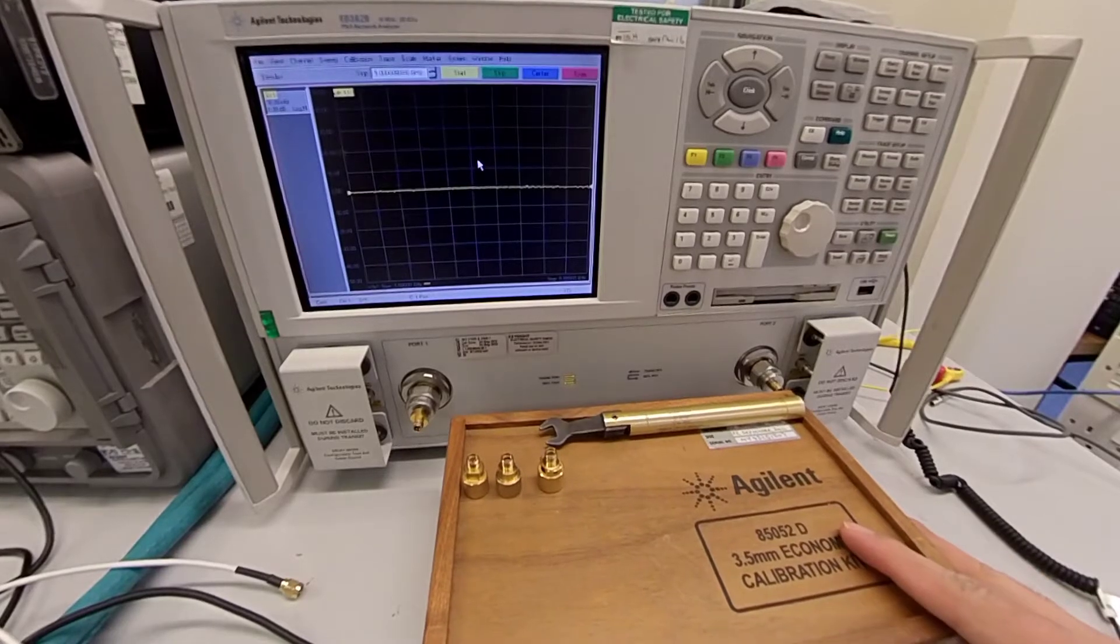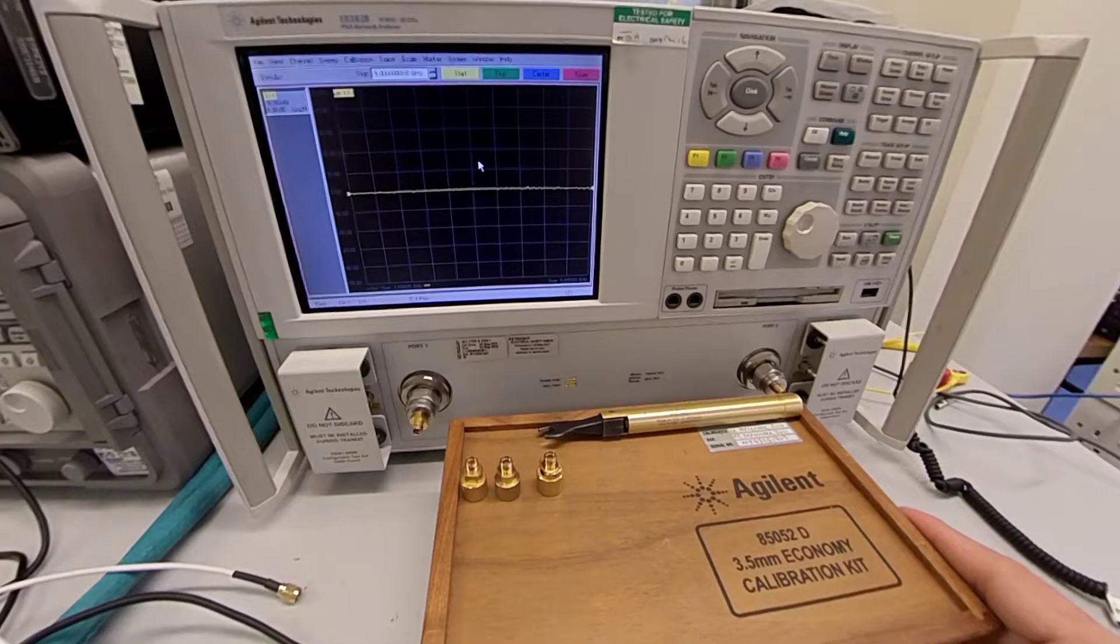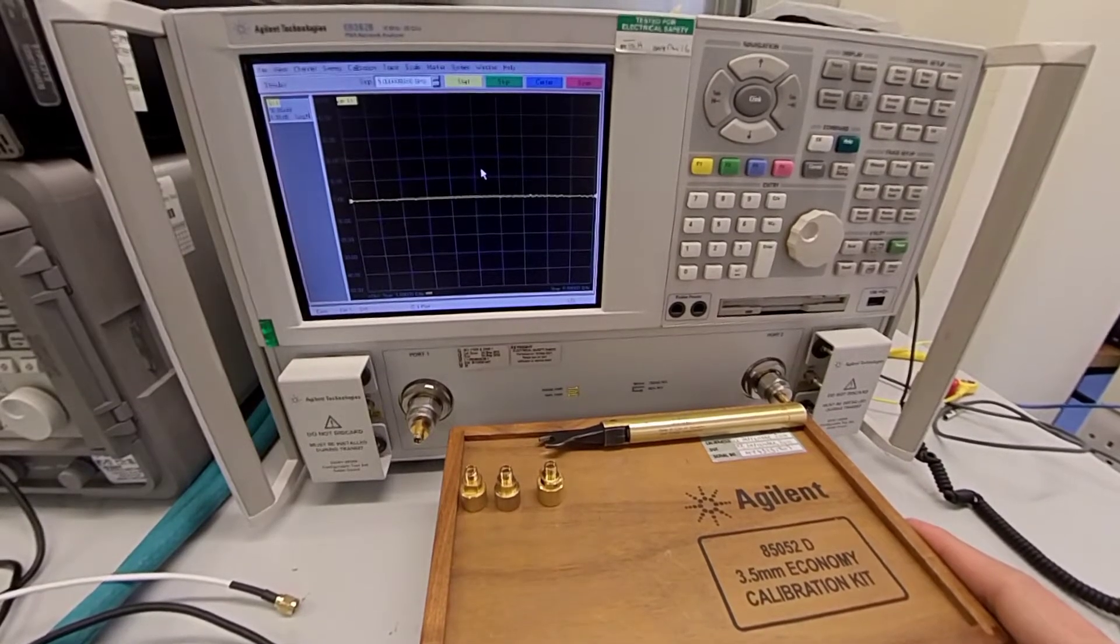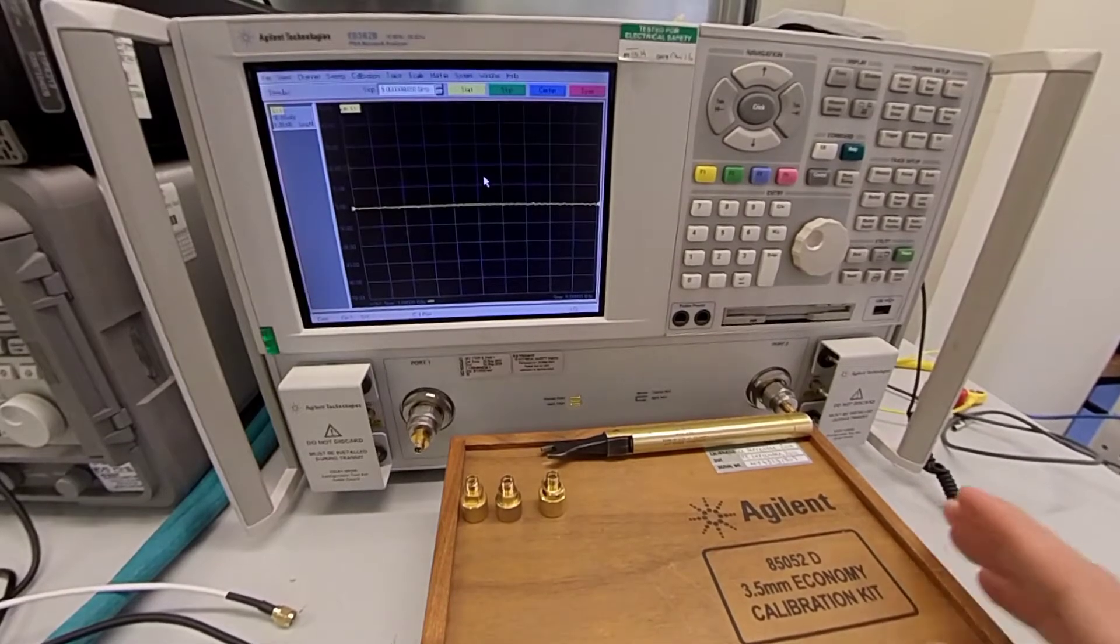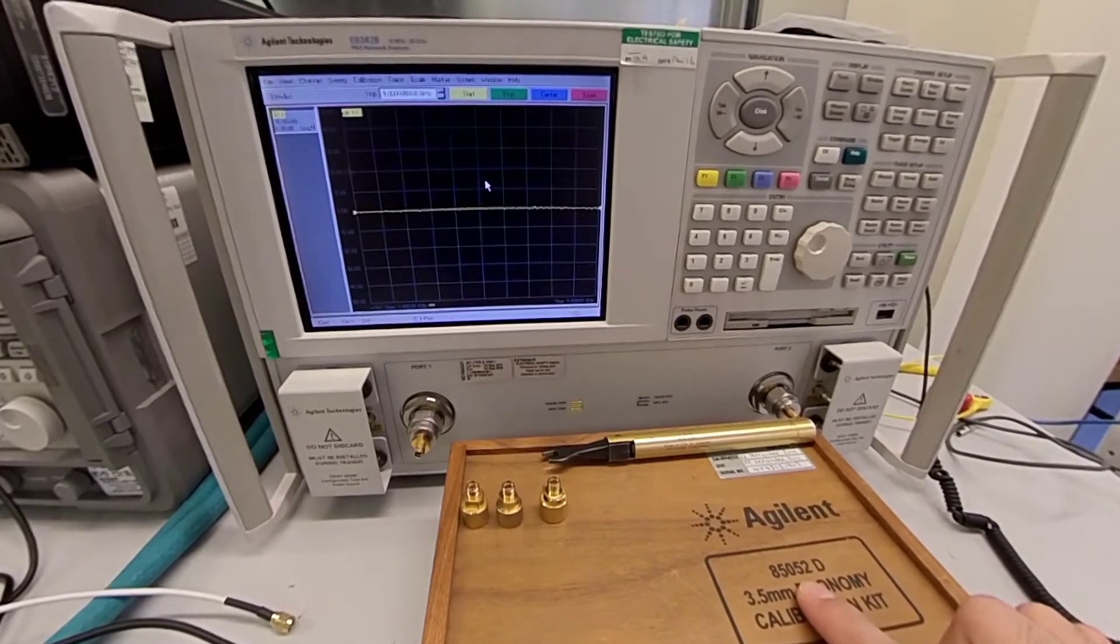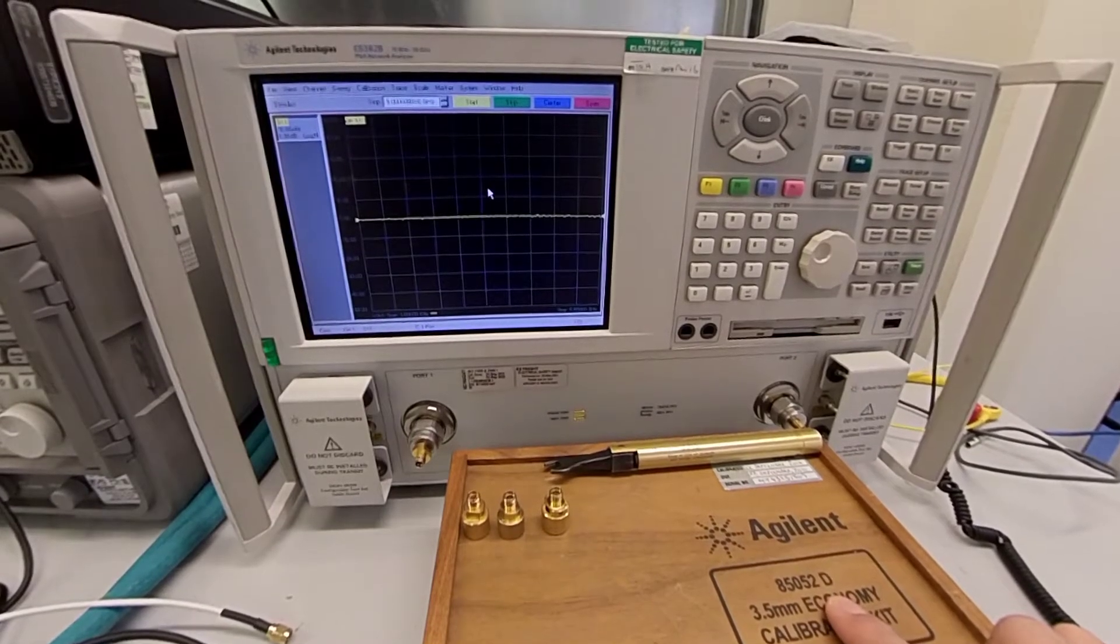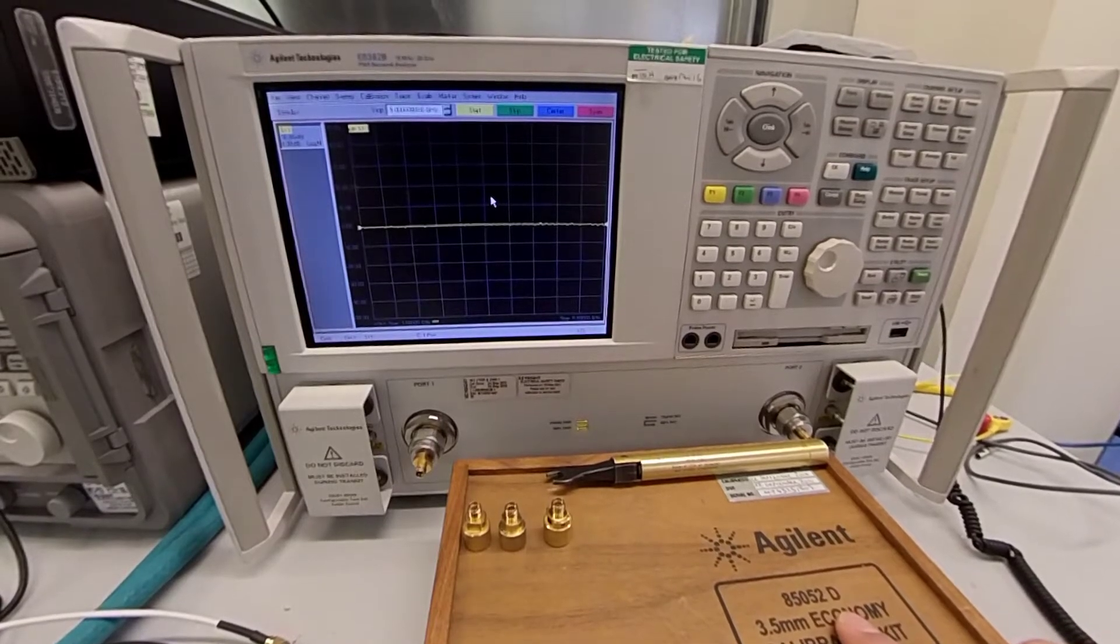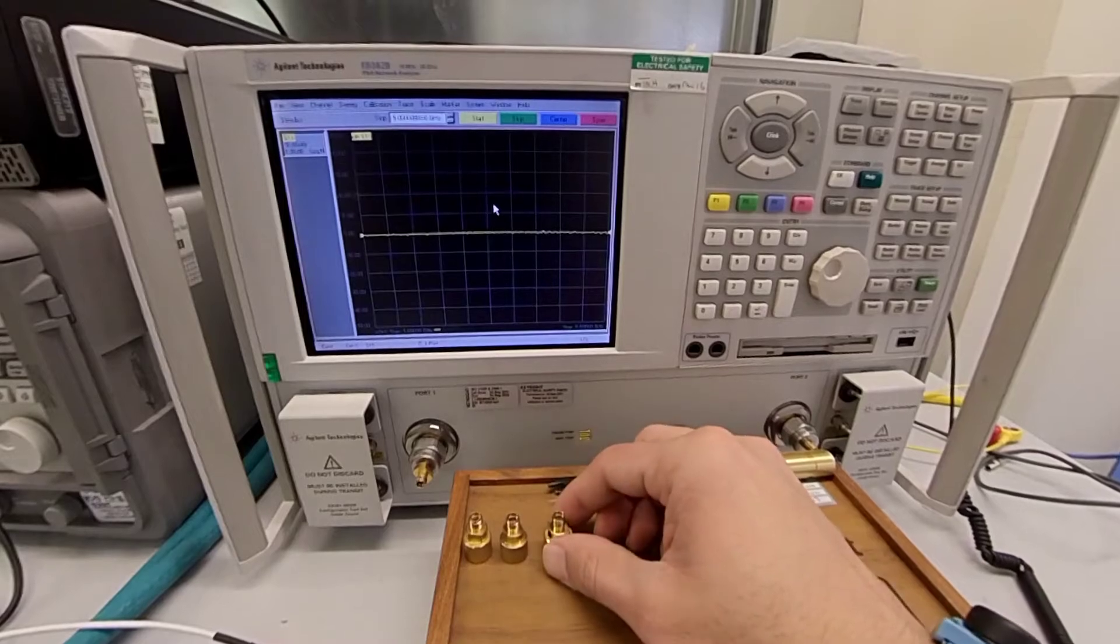In front of me you can see a mechanical calibration kit. Each analyzer is accompanied with a mechanical standard calibration kit. The model number for this kit is 85052D and we will select this model number when calibrating the analyzer. Each mechanical standard kit contains an open, short, and a broadband load.